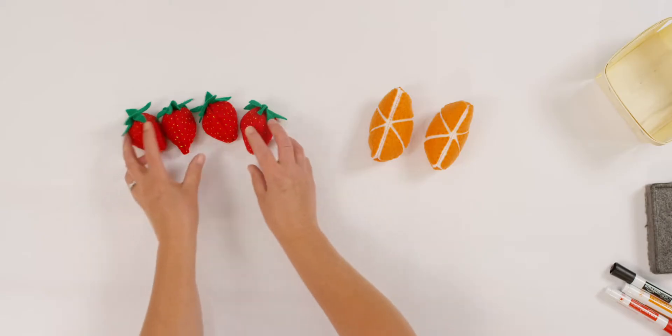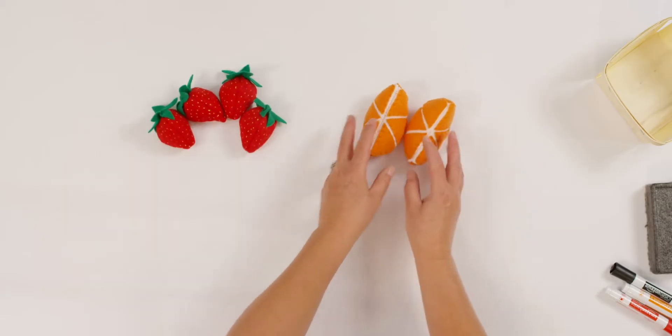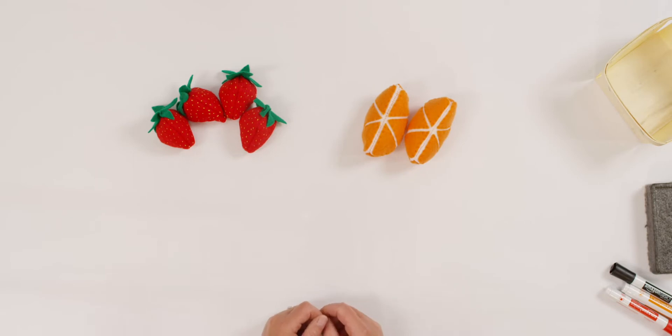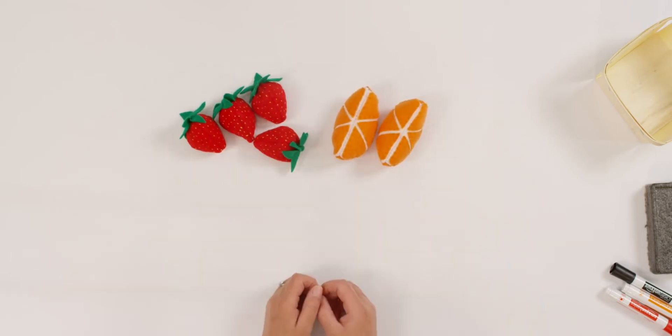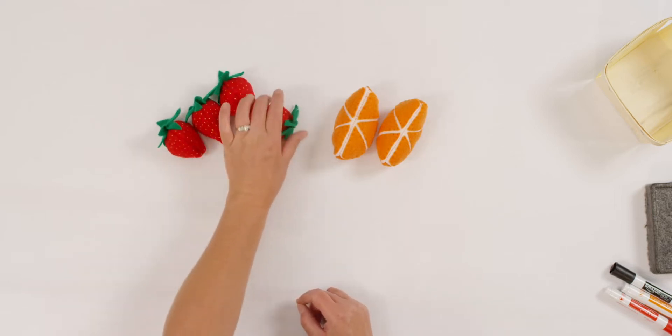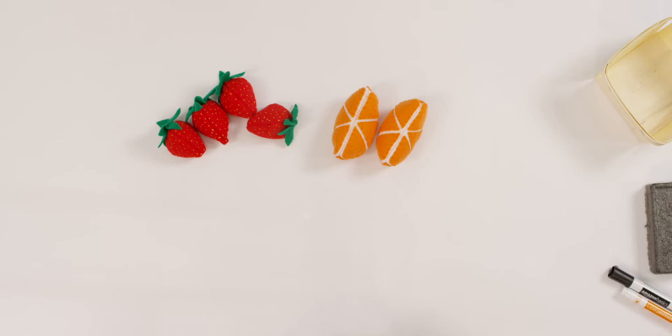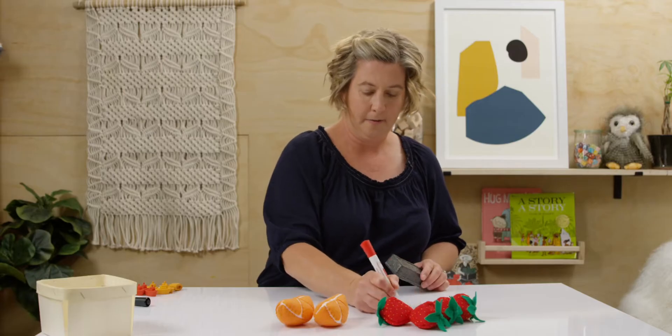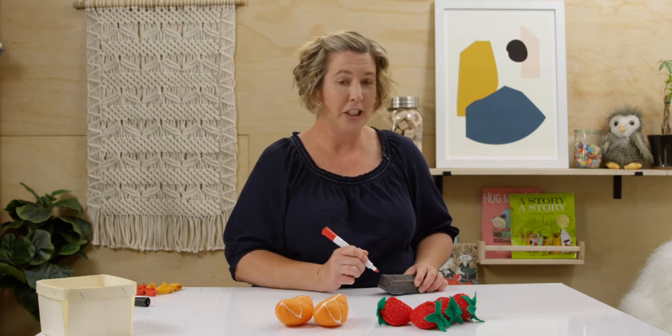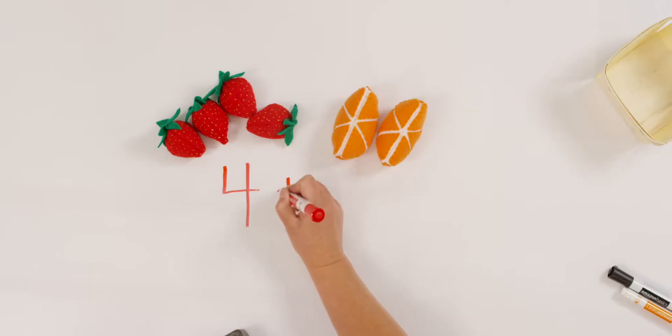Here's my addition story. I needed to make a fruit salad. So I went to the store and I picked up four strawberries and two oranges. Now I have six all together. Let's make that into an addition sentence. How many strawberries did I start off with? Four. And we're adding, so remember we put the plus sign. And how many oranges are there?